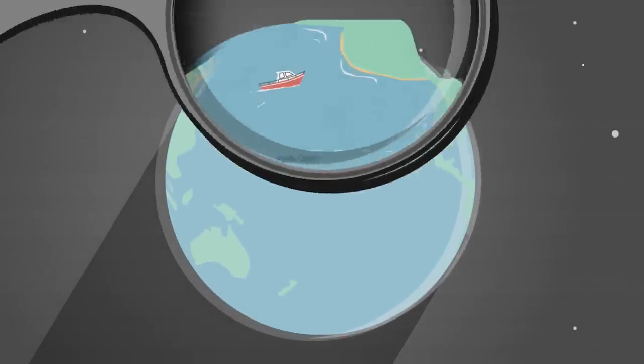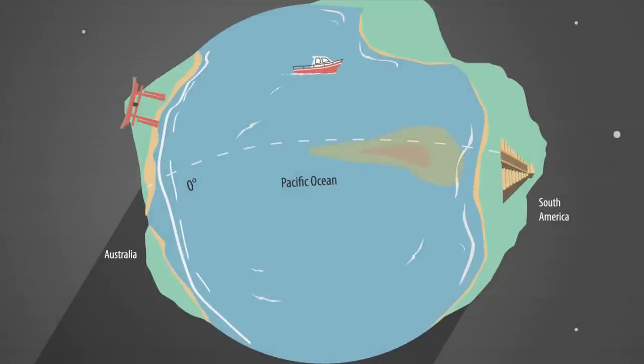El Niño is a natural phenomenon that shows up when ocean surface temperatures in the eastern-central Pacific become warmer than usual.